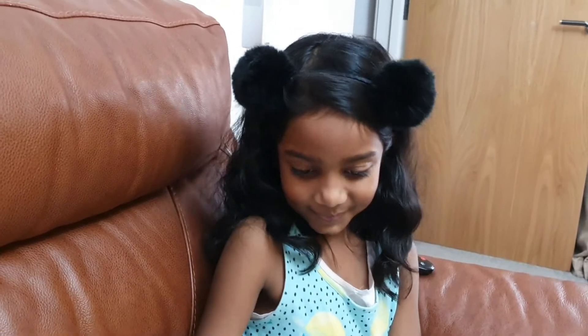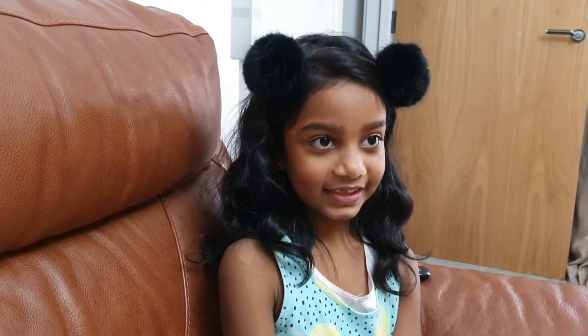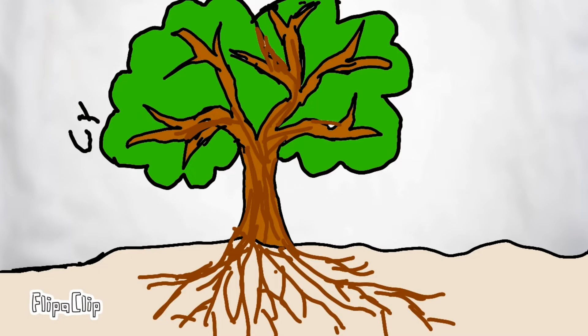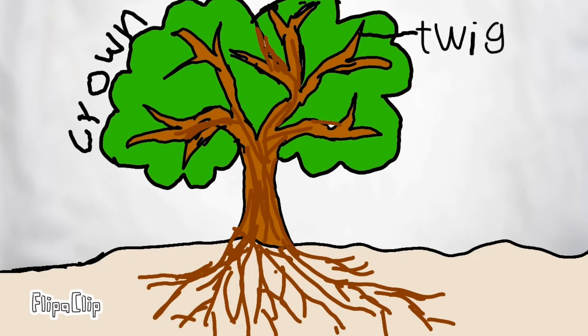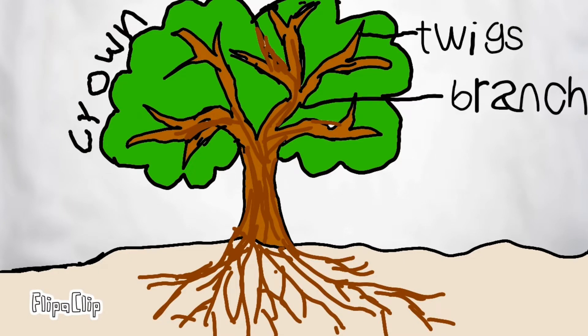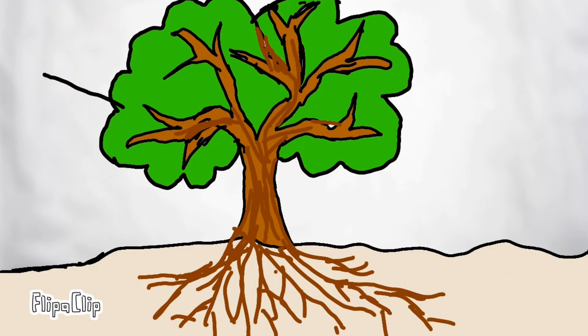What do you think are the parts of a tree, Prisha? Wood, leaves. Let's take a look. The top part of a tree is called the crown, and it is made up of leaves and twigs. The main parts of a tree are twigs, branches, trunk, and roots.